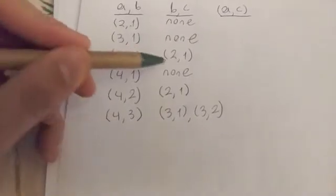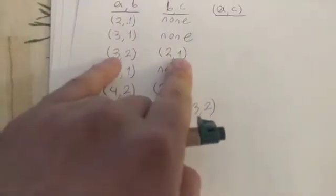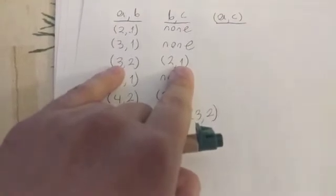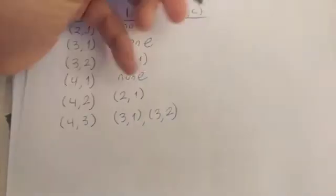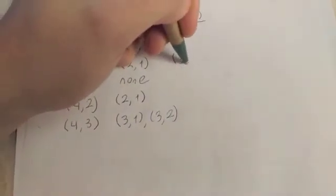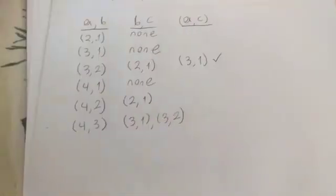For this one we have a (3,2) and a (2,1). Our outer ones make the A-C (3,1), which as we see is right here. So (3,1), that one's good.